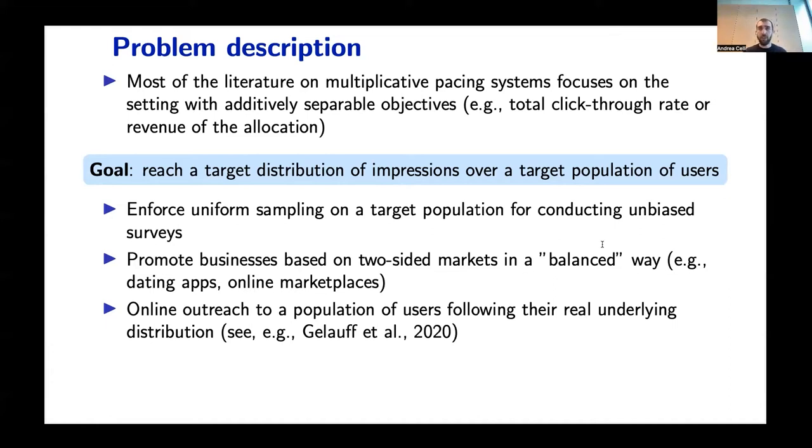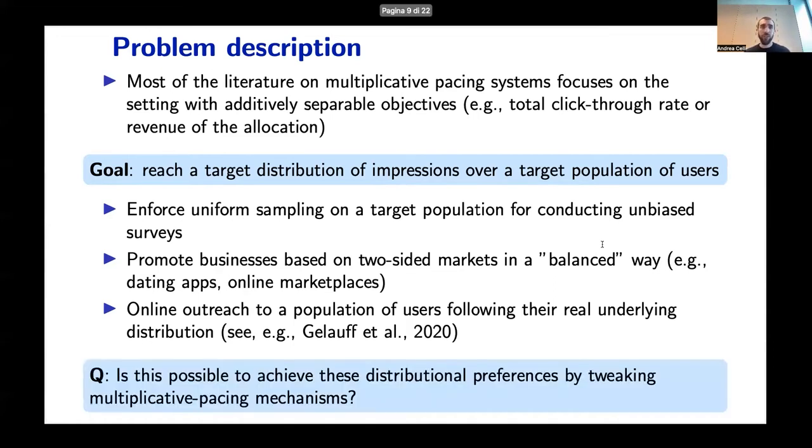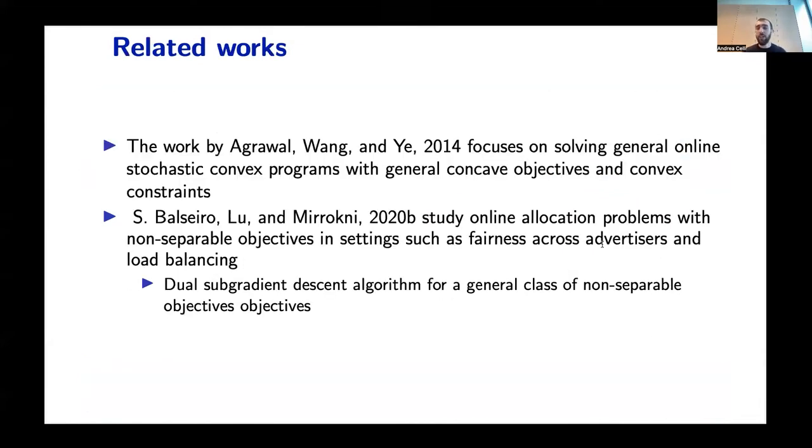Even if this kind of question has a lot of potential application, there is not an easy way in practice that the advertisers can use to balance their allocations. So the question that we wanted to ask in the paper is whether it's possible to achieve such distributional preferences by modifying existing multiplicative pacing frameworks. There are some related works that study settings where the objectives are not additively separable. In particular, this paper studies online allocation problems with non-separable objectives in settings like fairness across advertisers and load balancing. However, the framework provided in this paper cannot be immediately adapted to model our distributional preferences.